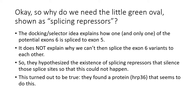Why do we need the splicing repressors shown as little green ovals in the picture? The docking-selector idea explains how one and only one of the potential exon 6 variants can be spliced to exon 5 — that clearly explains why they're mutually exclusive, since we can only bind one at a time and once it's been bound and spliced, the docking sequence is no longer present in the pre-mRNA. However, it does not explain why we can't then splice the exon 6 variants to each other. The people that did this work hypothesized the existence of splicing repressors that silence all those splice sites, a mechanism that has to be overcome by the docking and selector interaction. This turns out to be actually true — after hypothesizing its existence, they found a protein called HRP36 that seems to be the repressor, and its phenotype is that you do get exon 6 variants spliced to one another.